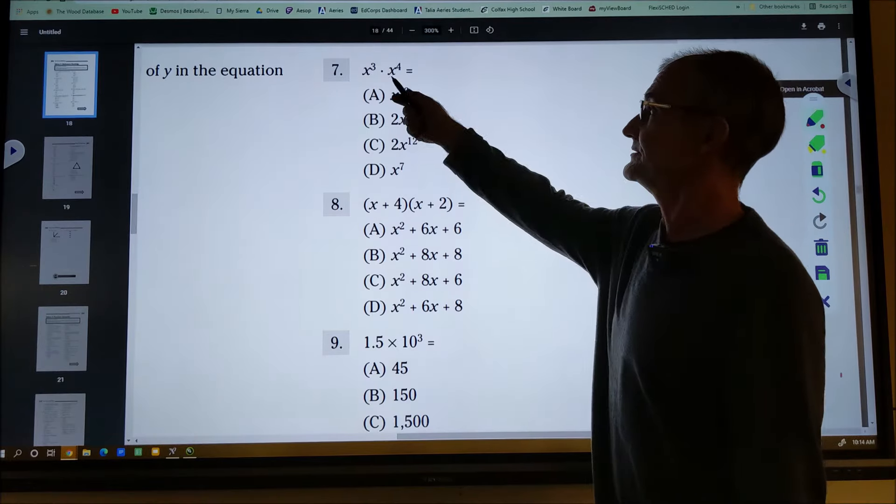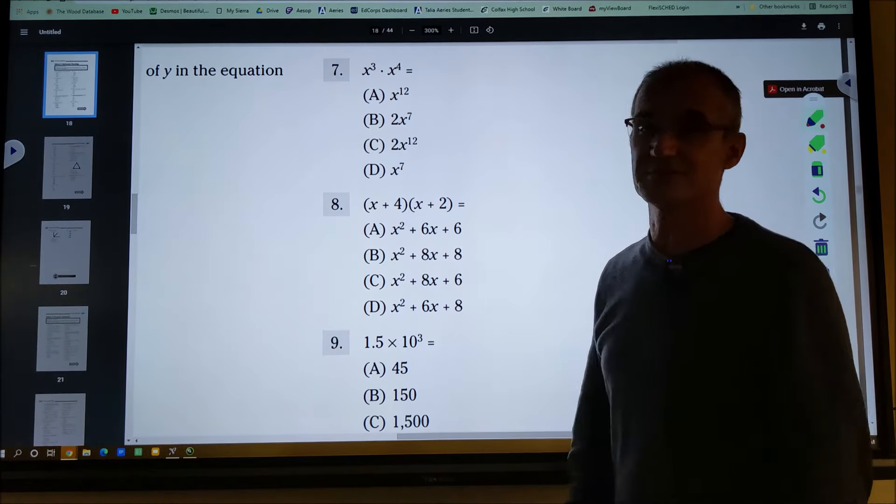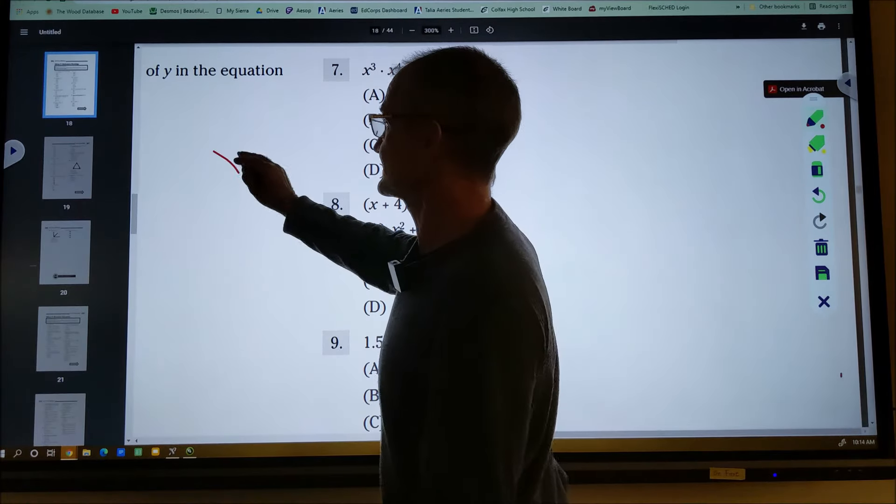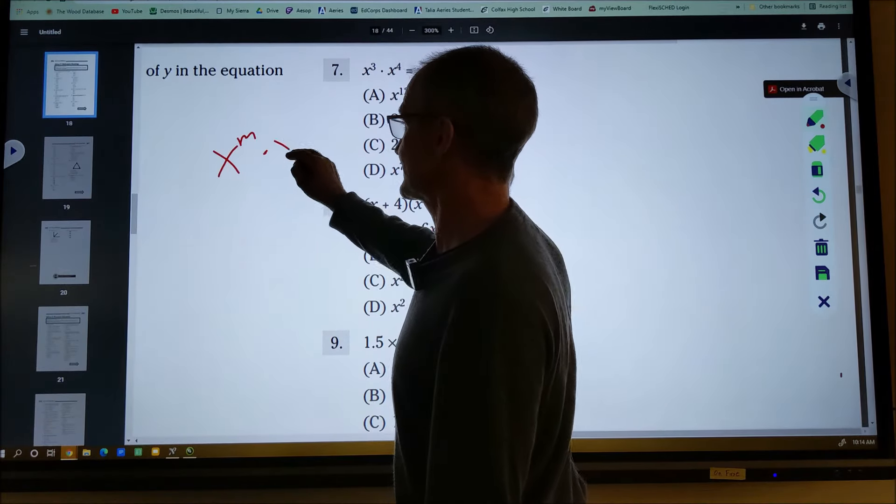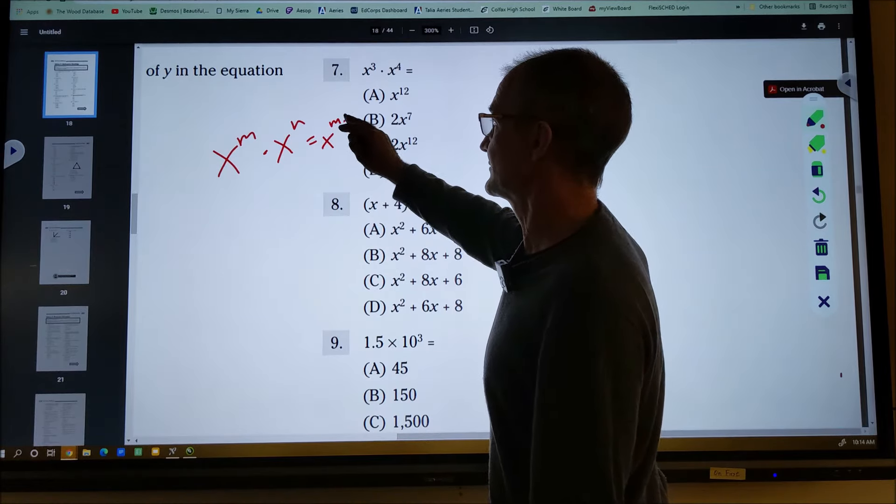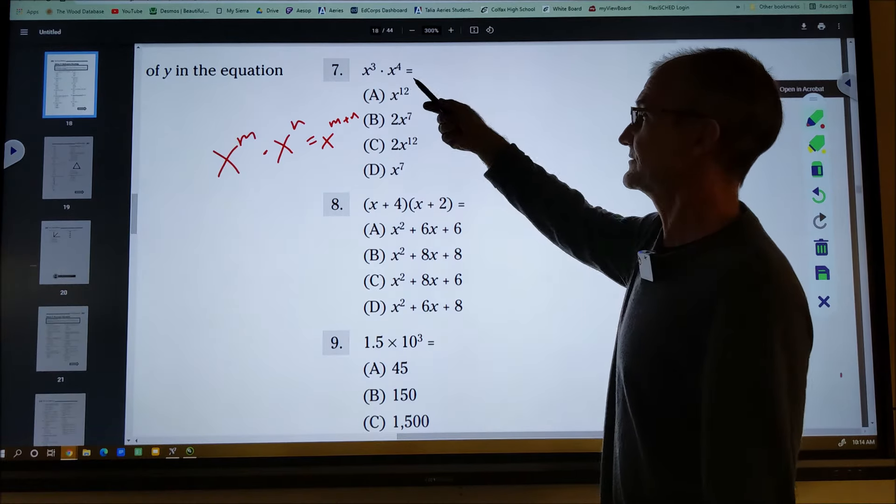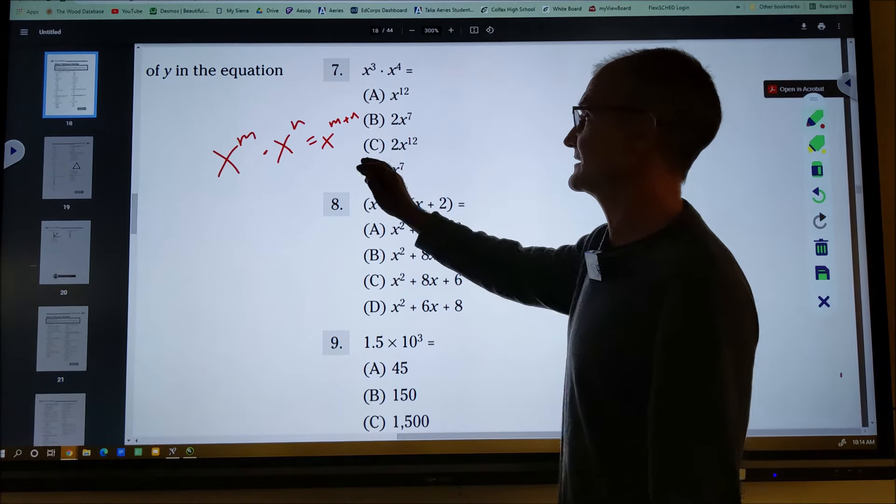Number seven here, x to the third times x to the fourth. This is just a check to see if you know the rules of exponents. If I have x to the m times x to the n, I add those exponents together to get x to the m plus n. And that's what I'm doing here. x to the third times x to the fourth. I add them together to get x to the seventh.